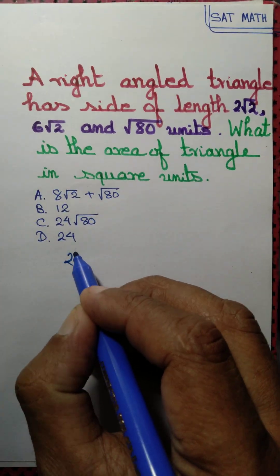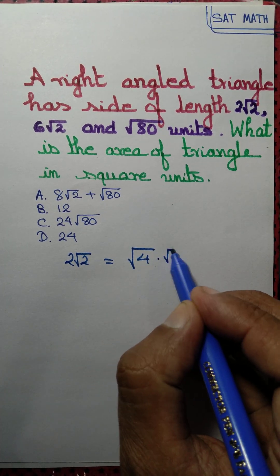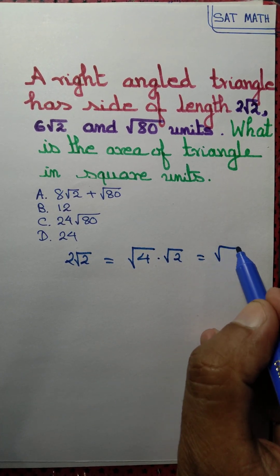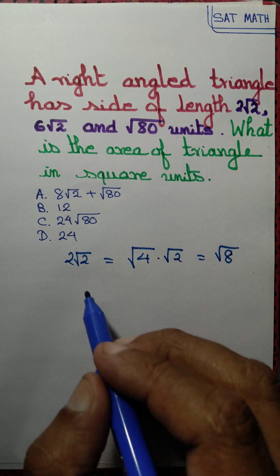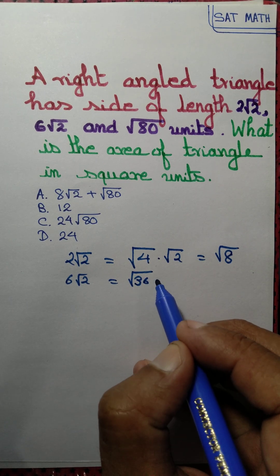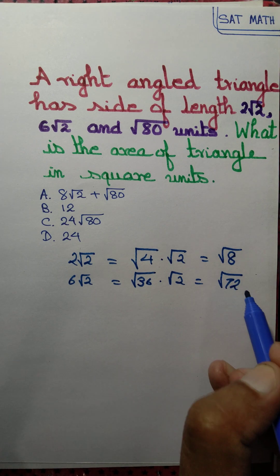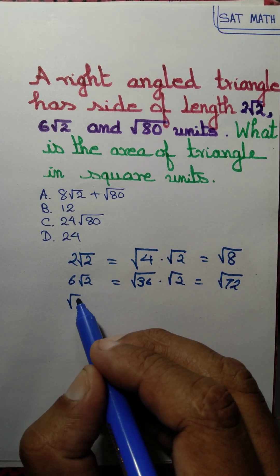Observe that 2√2 can be written as the square root of 4 times √2, that is √8. And 6√2 equals the square root of 36 times √2, that's √72. And the square root of 80, of course, that's equal to √80 only.